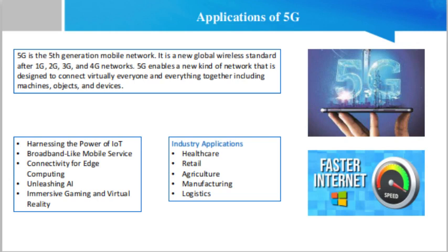Agriculture: farms of the future will use more data and fewer chemicals. Taking data from sensors located directly in fields, farmers can identify with pinpoint precision which areas need water, have a disease, or require management. As wearables become less expensive and 5G makes it easy to scale networks containing large numbers of IoT devices, health monitoring for livestock may also emerge. With more accurate health data, farmers can reduce the use of antibiotics without compromising the safety of the food supply.